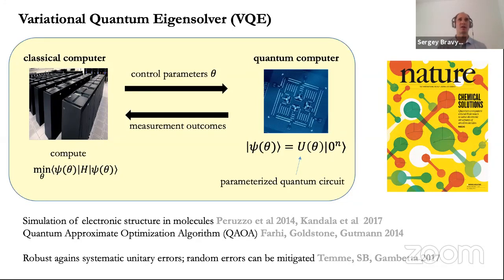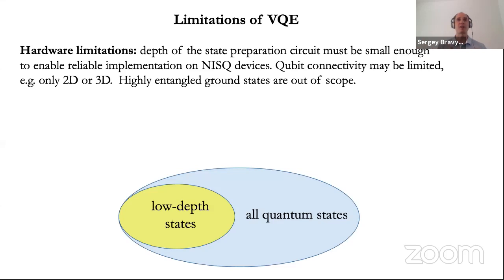Many people are enthusiastic about quantum variational algorithms such as VQE, where variational states are defined by a parameterized family of quantum circuits. A quantum computer is supposed to execute a state preparation circuit, perform a measurement, and send measurement outcomes to a classical computer which estimates the variational energy. The main selling point of VQE is that it doesn't need high-fidelity quantum gates — it is robust against systematic unitary errors, and there are ideas to mitigate random errors such as depolarizing noise.